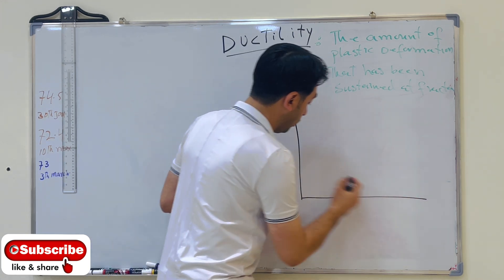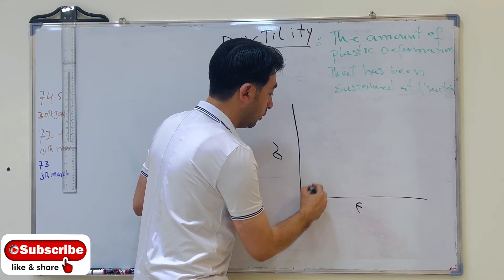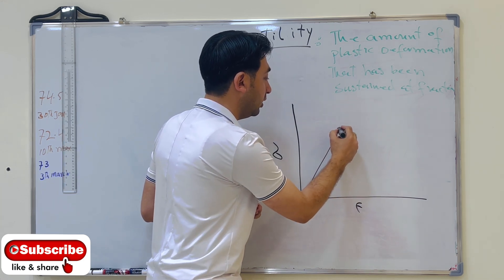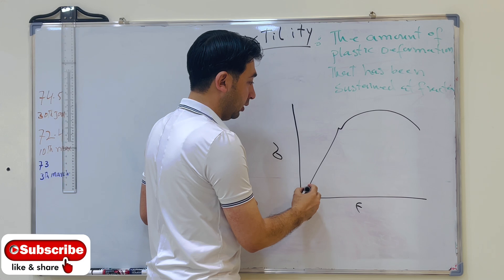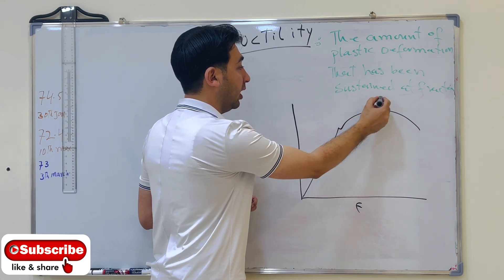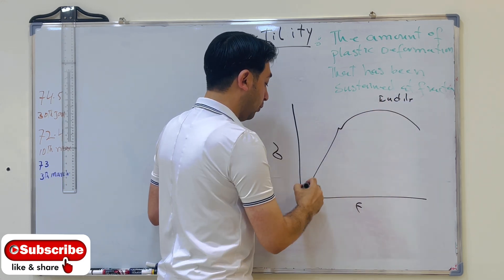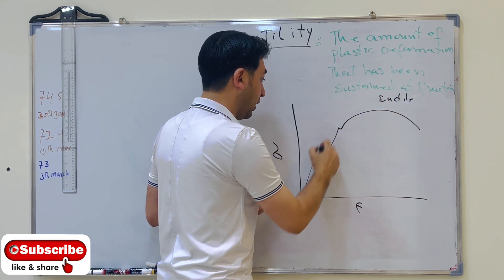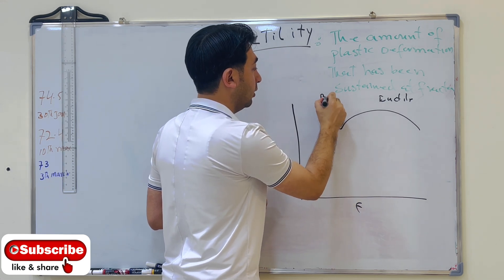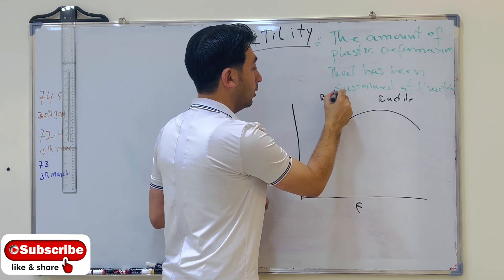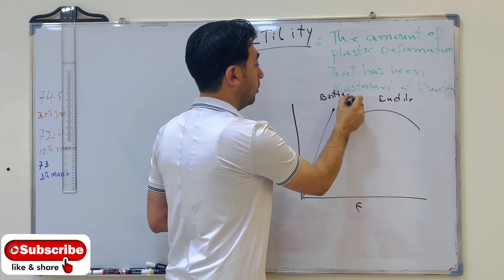We have stress here and strain here. We have the elastic region and then we have the plastic region. This is for the ductile material. For the brittle material, it will just go up and then break — this is brittle material.